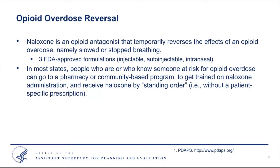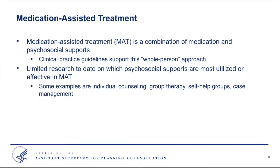Naloxone is a prescription drug, but you can buy it in many pharmacies. In most states, people who are at risk for an opioid overdose — or know someone who is — can walk into a pharmacy and receive naloxone by a standing order without a patient-specific prescription, similar to walking in and requesting a flu shot. In addition, many community-based programs distribute naloxone kits and provide training on naloxone administration.